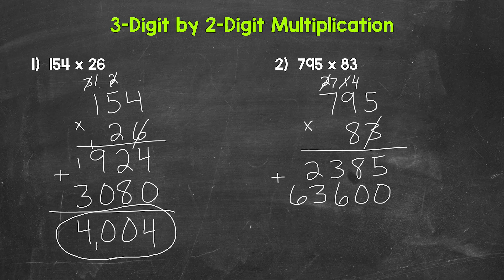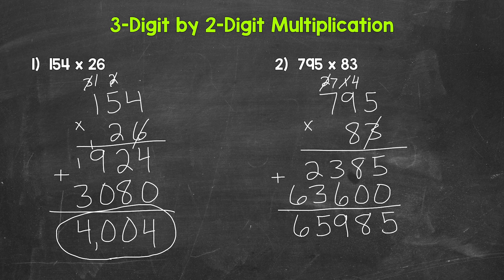So let's add these for our final answer. Five plus zero is five. Eight plus zero is eight. Three plus six is nine. Two plus three is five. And then we have a six in the ten thousands place. So our final answer is 65,985.